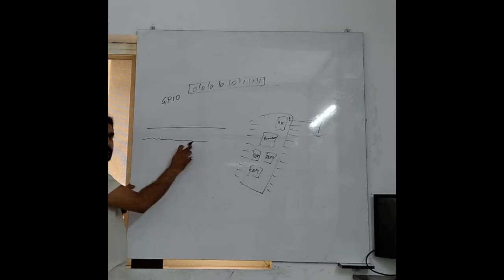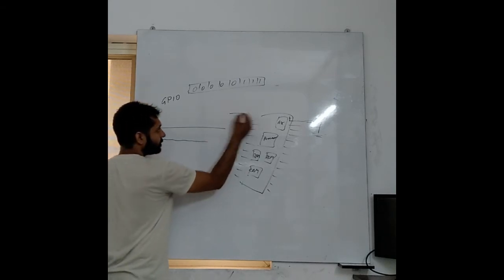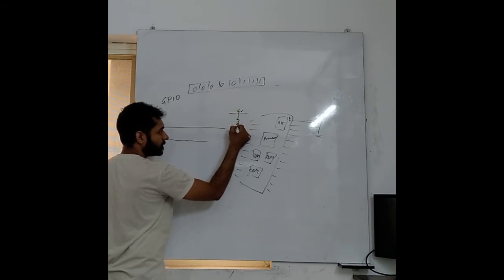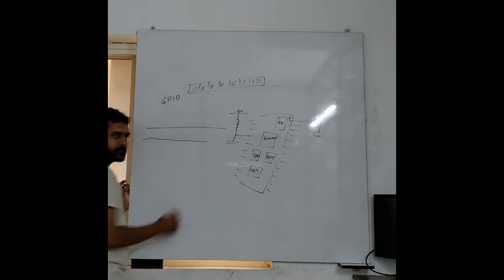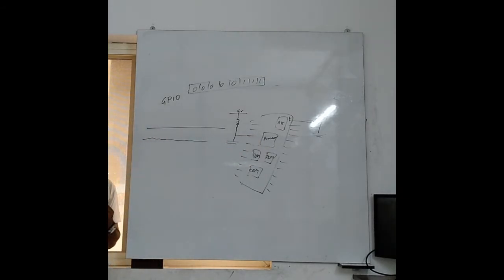So to avoid this thing, to avoid having this one as the reference for ADC, what we do is we will take 5 volts, pass it through an inductor, a capacitor, and we will give it as reference to that particular pin. And that will become our reference for ADC.